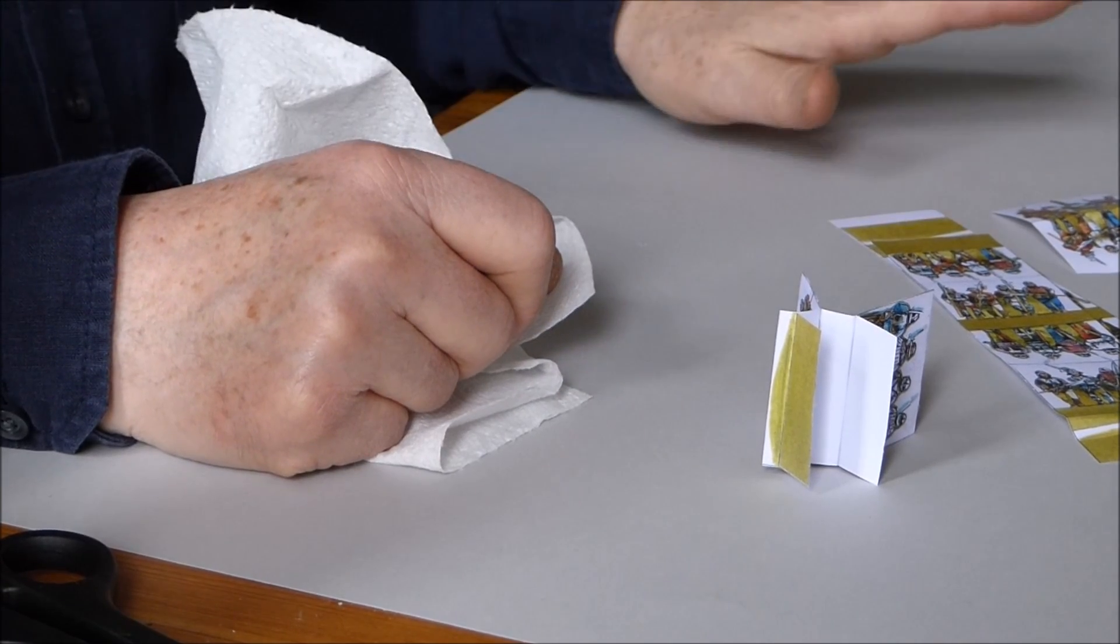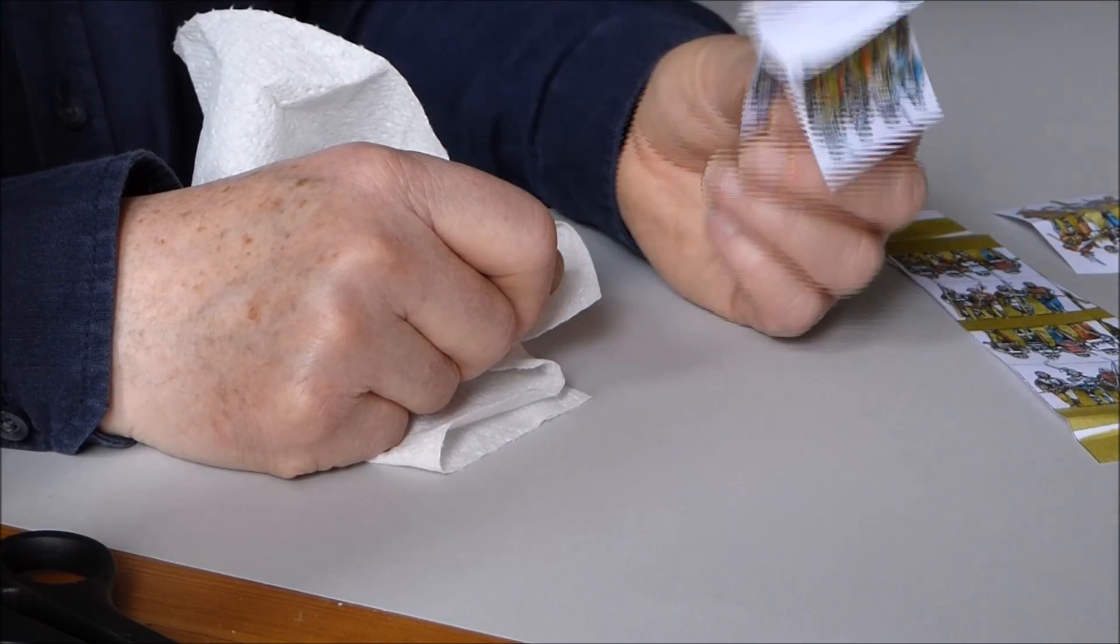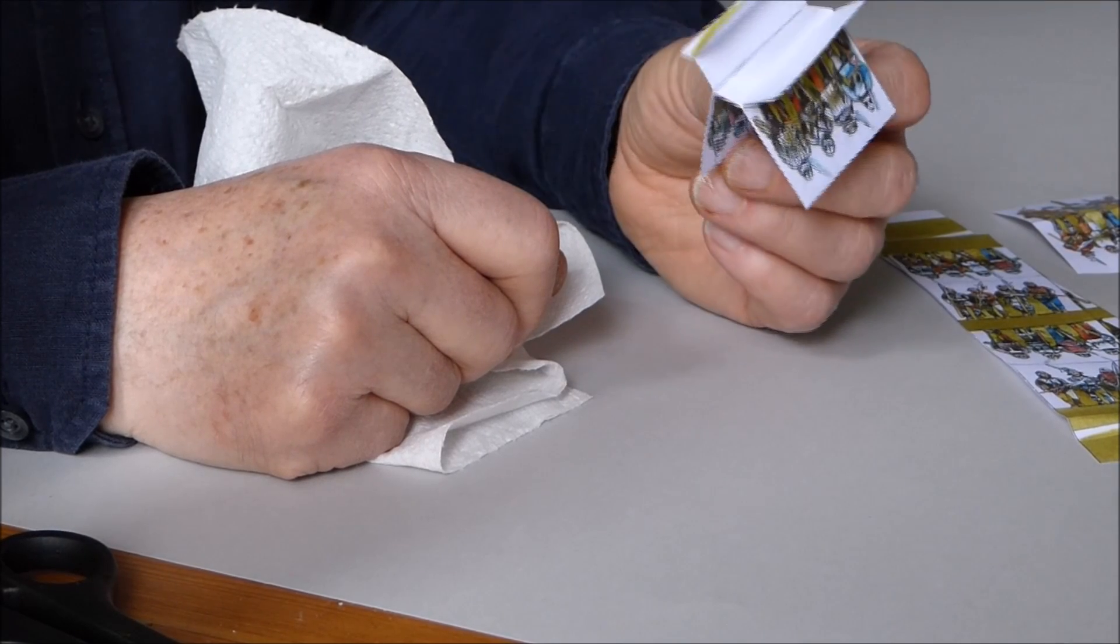I like to prepare six. I do two sheets at a time. I like to prepare six of these little stands. Put them to one side ready for the process of cutting out.